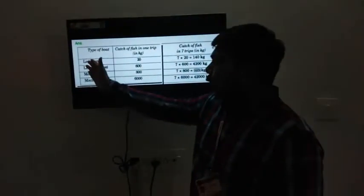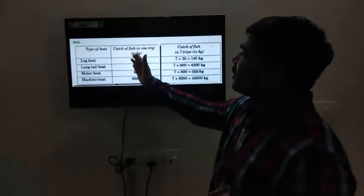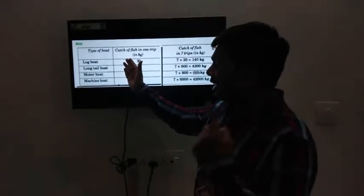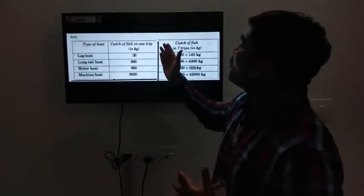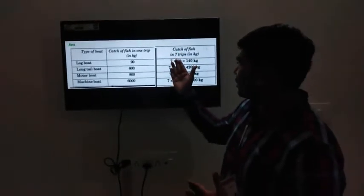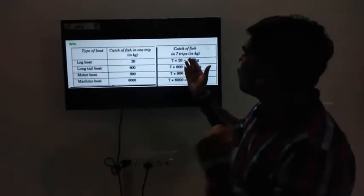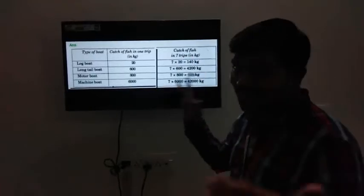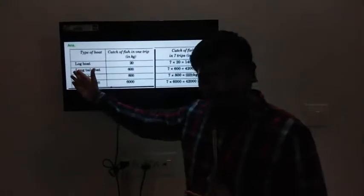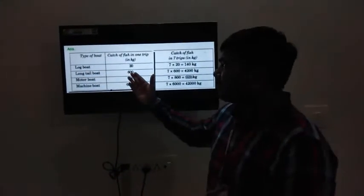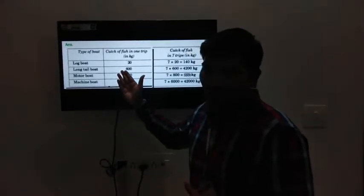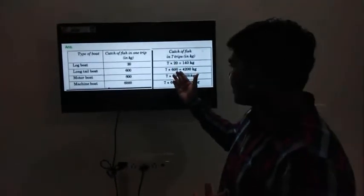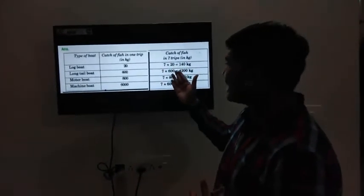Log boat brings 20 kg of fish in one trip, so 20 multiplied by 7, its answer will be 140 kg in 7 trips. Long tail boat in one trip, 600 kg, and in 7 trips, 7 into 600, answer will be 4200 kg.